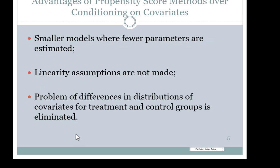Why should we use the propensity score rather than adjusting for covariates directly? Because the propensity score summarizes potentially a large number of covariates to a single number, you can estimate treatment effects with smaller models with fewer parameters. You don't need to model the relationship between covariates and the outcome, and therefore you don't need to make any assumptions such as linearity. Once you balance the treatment and control groups with respect to the propensity scores, you will balance them with respect to the distribution of covariates.